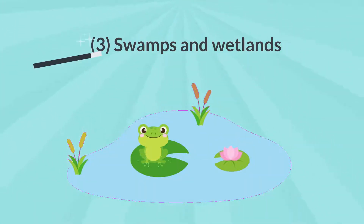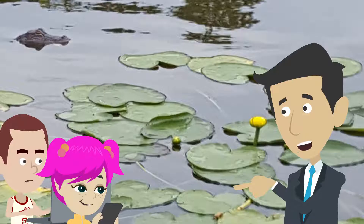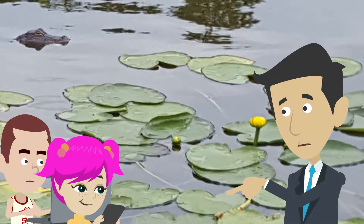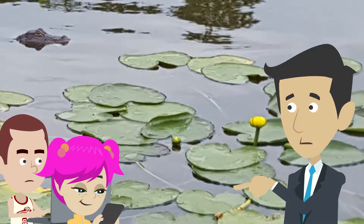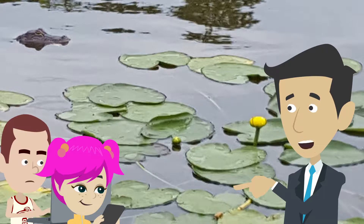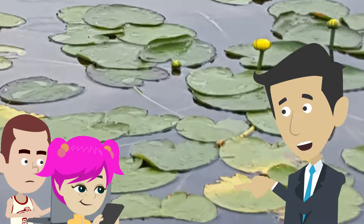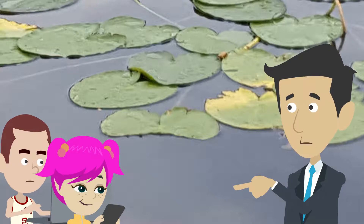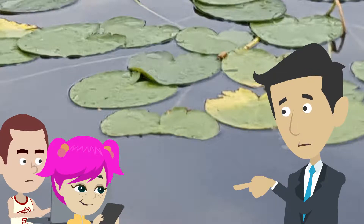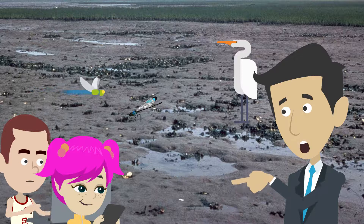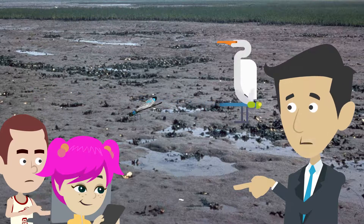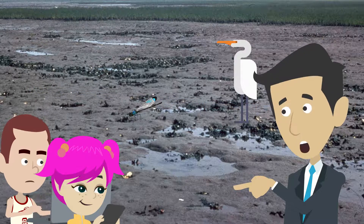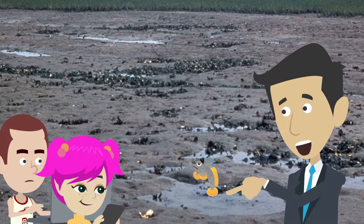Swamps and Wetlands. Wetlands are swamps, sometimes covered by water, which have a wide diversity of plants and animals. Plants such as black spruce and water lilies are usually found in wetlands. The fauna includes dragonflies and damselflies, egrets and other birds, and fishes such as mudskippers.